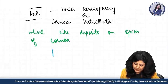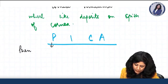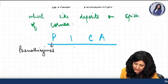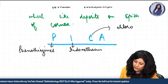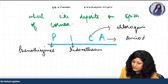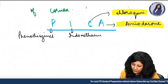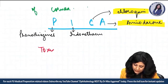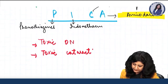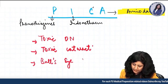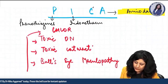Other drugs causing vortex keratopathy can be remembered by the mnemonic PICA: phenothiazines, indomethacin, chloroquine, and amiodarone. Chloroquine is particularly important as it causes multiple ocular effects: toxic optic neuropathy, toxic cataract, bull's eye retinopathy/maculopathy, and vortex keratopathy.